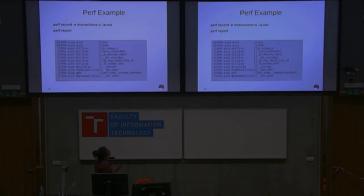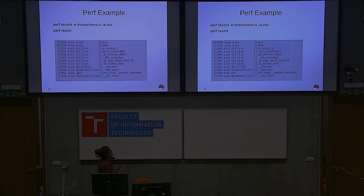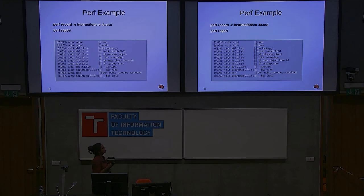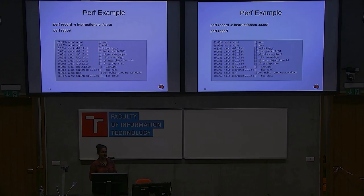For the perf tool, specifying perf record with -e gives you a record of what is happening in the user space of your program. With the same example I mentioned earlier, I get output showing the maximum CPU time is taken in the sum function. If I'm not happy with the overall performance, since the maximum time is going into this function, my first step would be to open the sum function's code and see what can be done to get better performance.